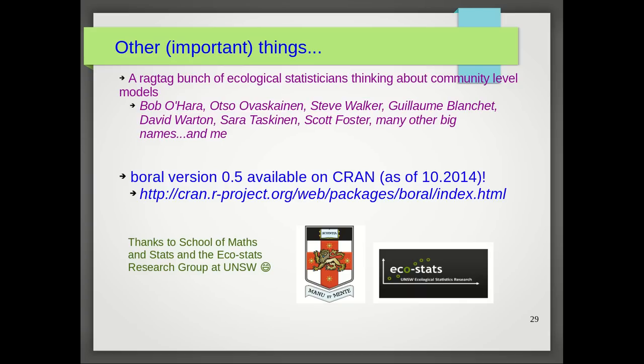Otso and Guillaume are two of a ragtag bunch of ecological statisticians thinking about community models. There are some very big names here all around the world, and me. And we're all trying to think about ways of modeling multi-species data and trying to account for things like species interactions, missing covariates, etc.